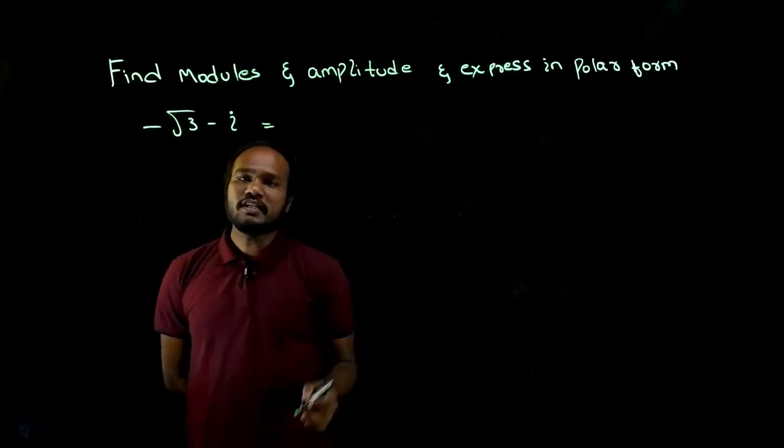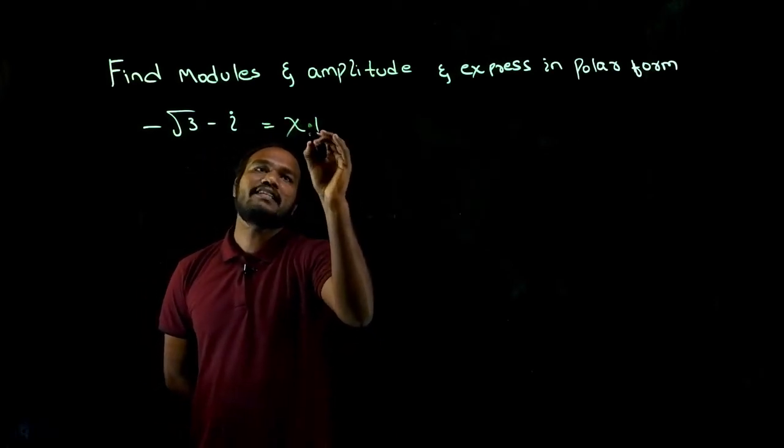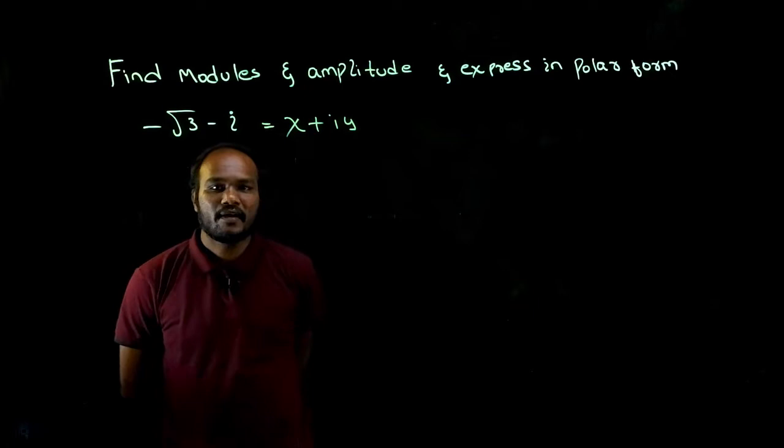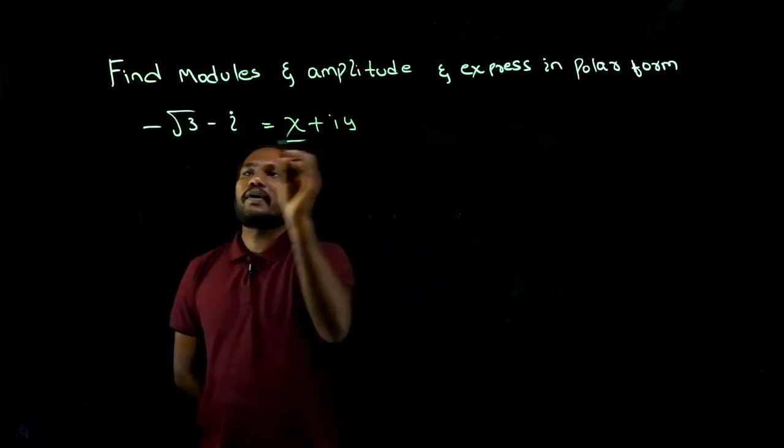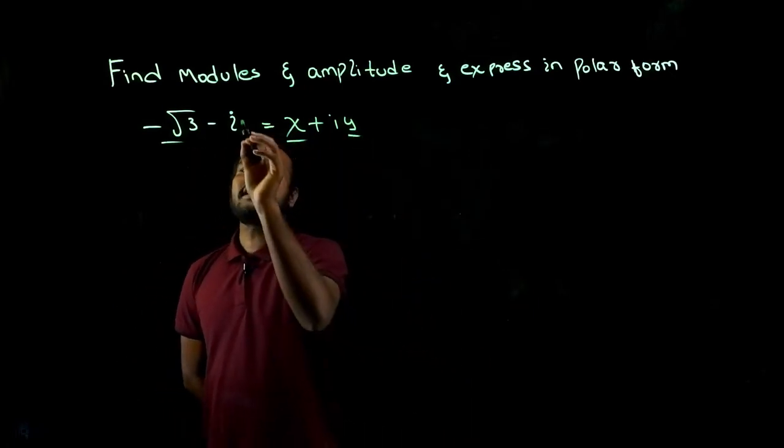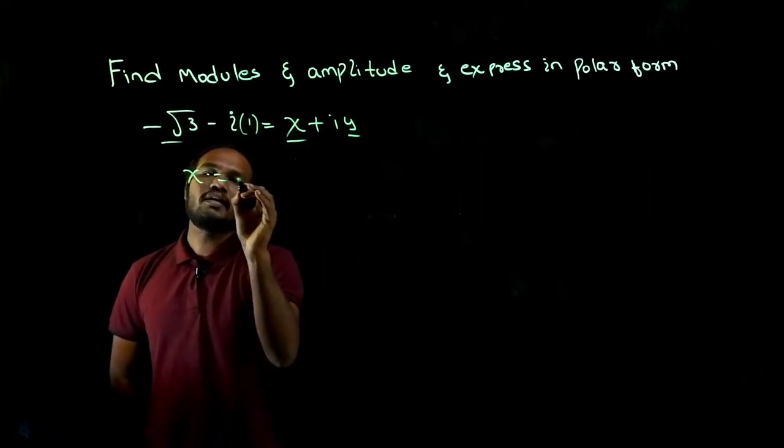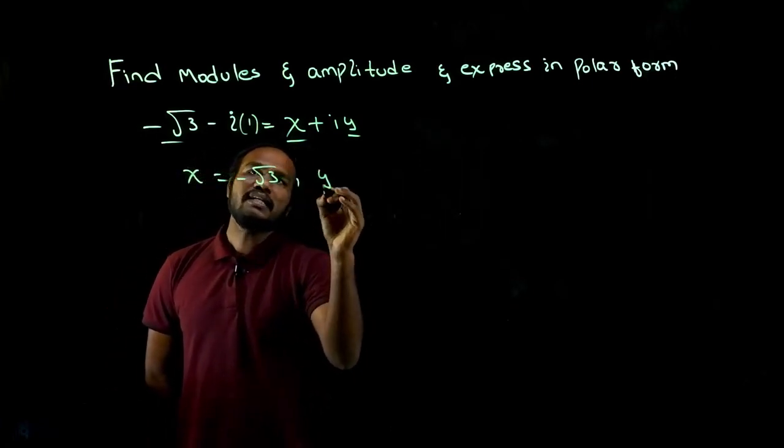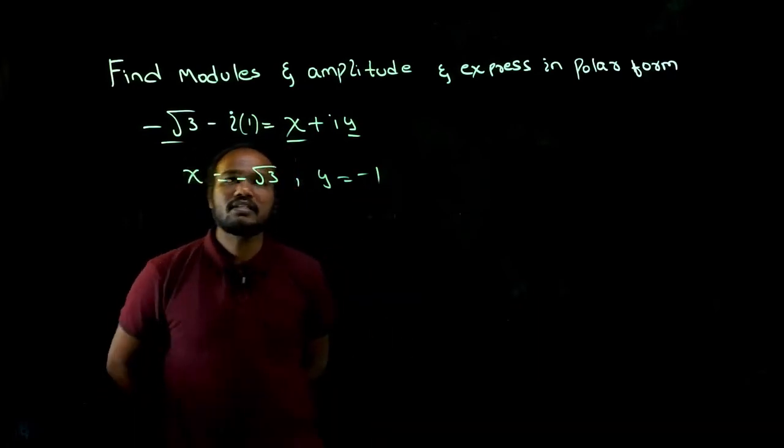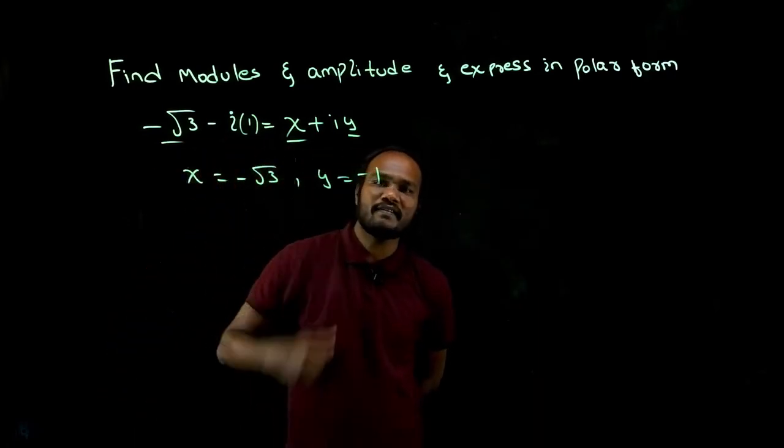The first thing we need to do is compare this with x plus iy. What is the x value and what is the y value? That is the i coefficient. So x is equal to minus root 3, y is equal to minus 1, because the i coefficient is the y value.